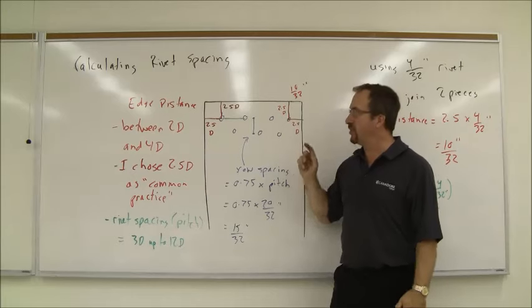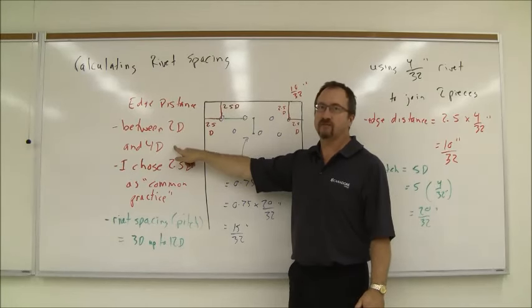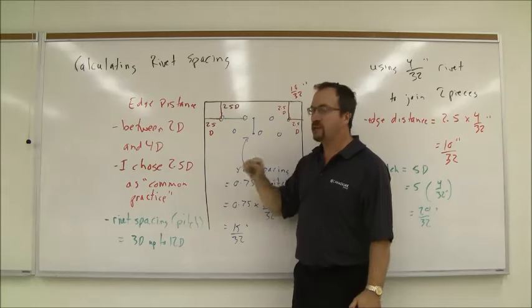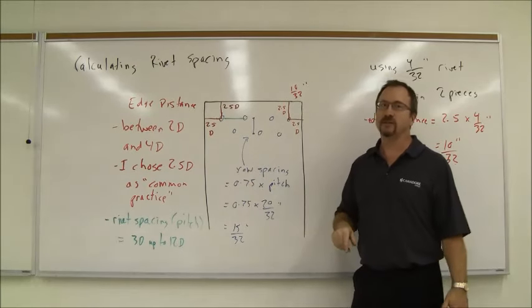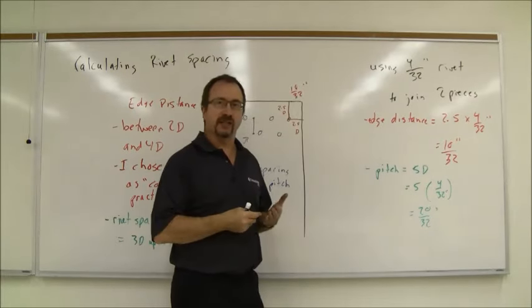That space from the edge can be anywhere from two times the diameter of the rivet to four times the diameter of the rivet. I explained to you that common practice is to use two and a half times the diameter of the rivet. So for this example I'm using 4/32 inch rivets.